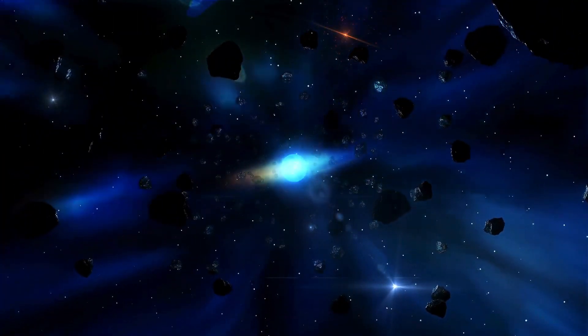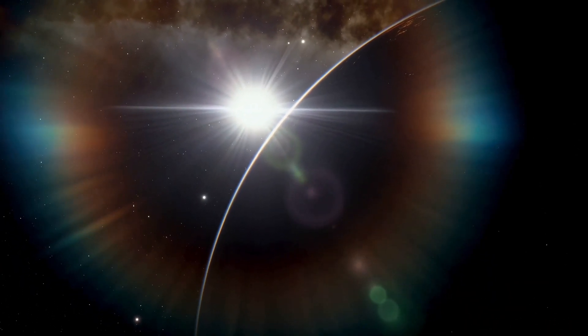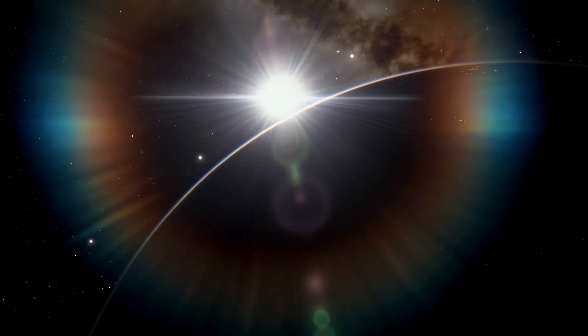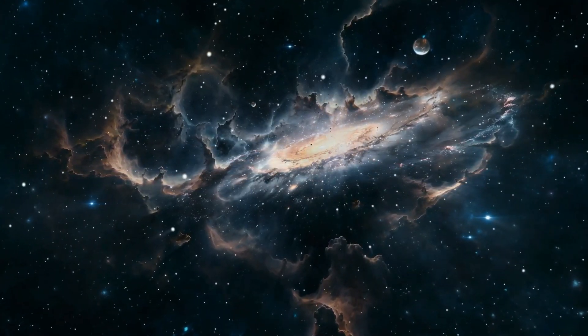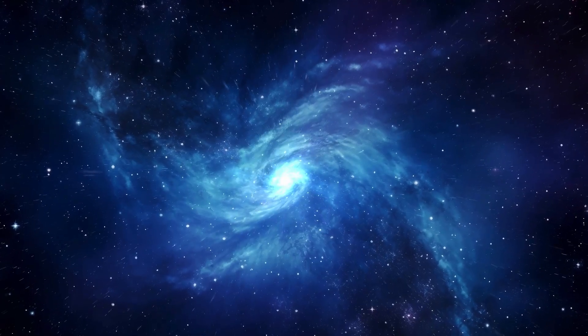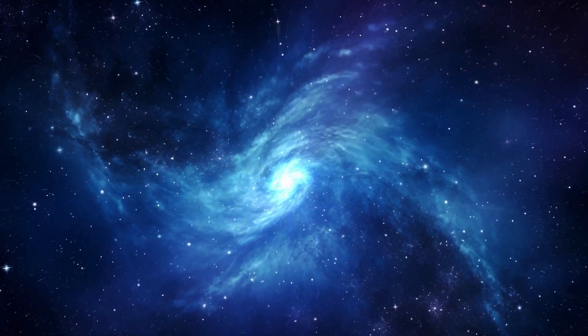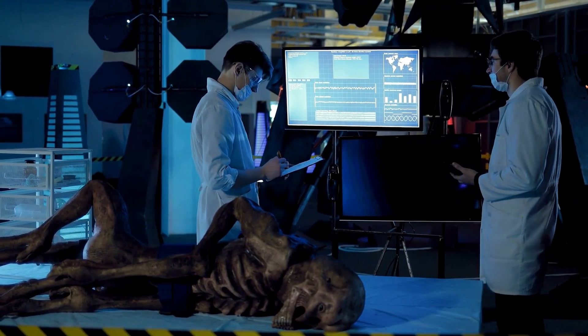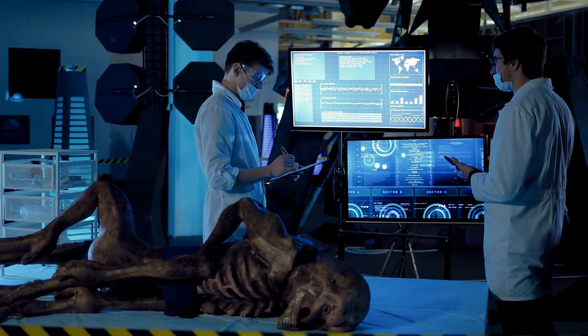The organic compounds detected on 'Oumuamua's surface have sparked speculation about its potential role in transporting the building blocks of life across the universe. In a cosmos full of possibilities, could 'Oumuamua serve as a natural vehicle for distributing essential molecules to other star systems? This phenomenon, known as interstellar panspermia, suggests that objects like 'Oumuamua could play a crucial role in spreading the ingredients for life throughout the galaxy. Not only does this idea challenge our understanding of the universe, but it also makes us wonder whether events in Earth's past might have been influenced by similar processes.